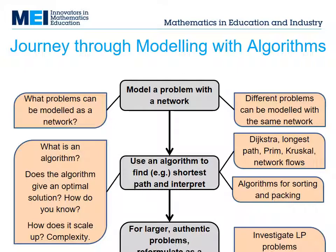Think about two problems. A sat nav is required to find the shortest route from one town to another. A biologist wants to know how long an infectious disease that affects trees will take to spread through a forest. These seem quite different problems, but both of them can be modeled with a network, and both are about finding a shortest path through the network. This immediately shows the power of the modeling approach — reducing very different problems to the same mathematics.